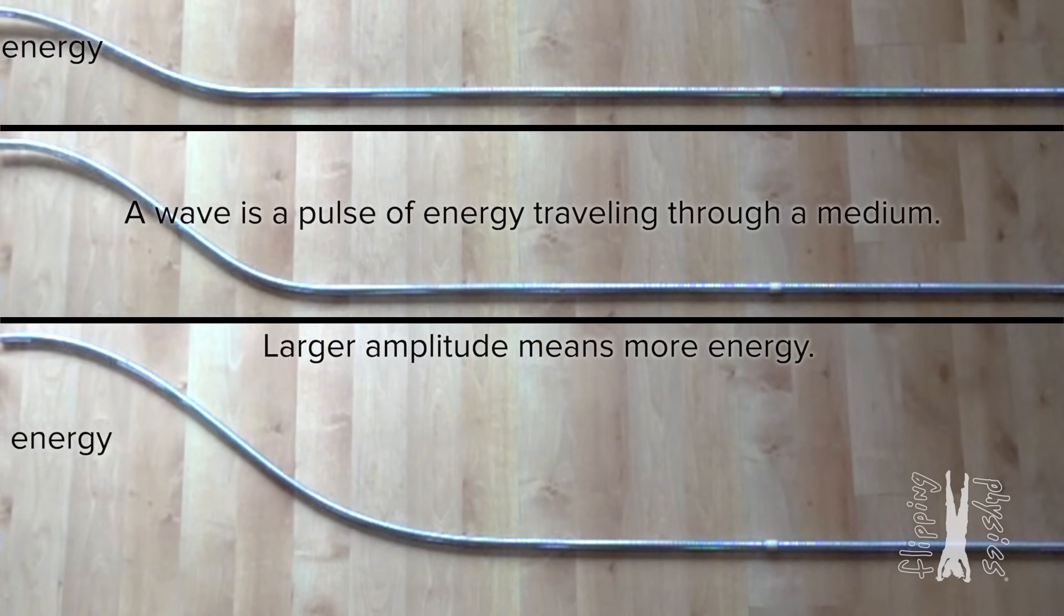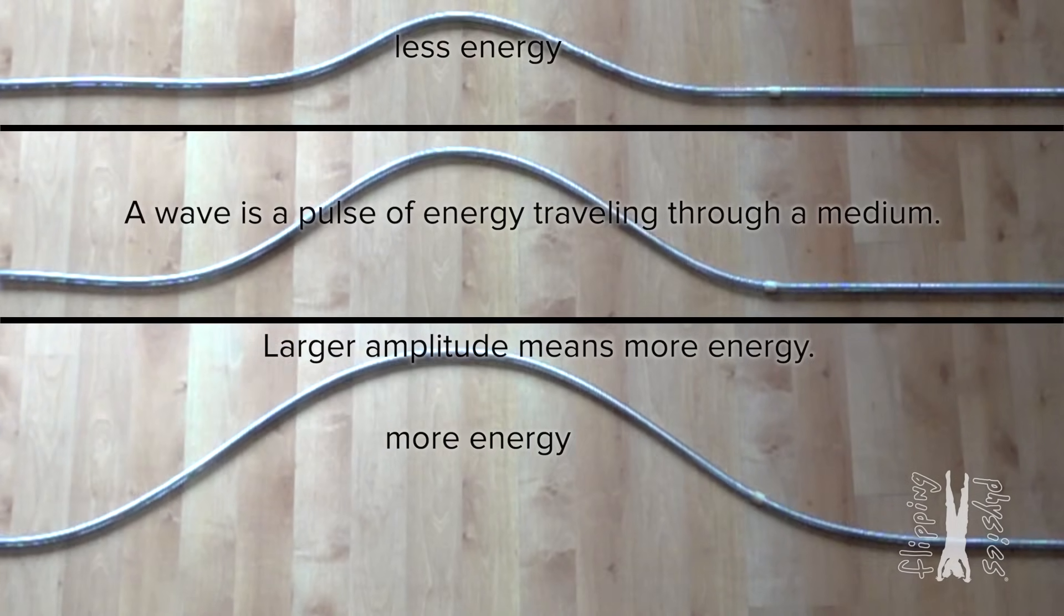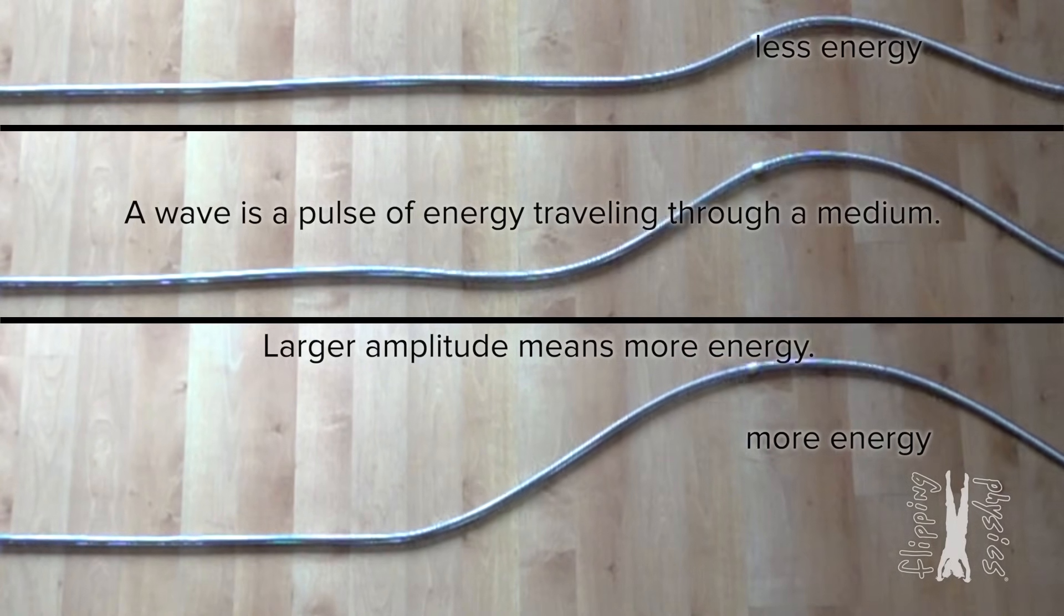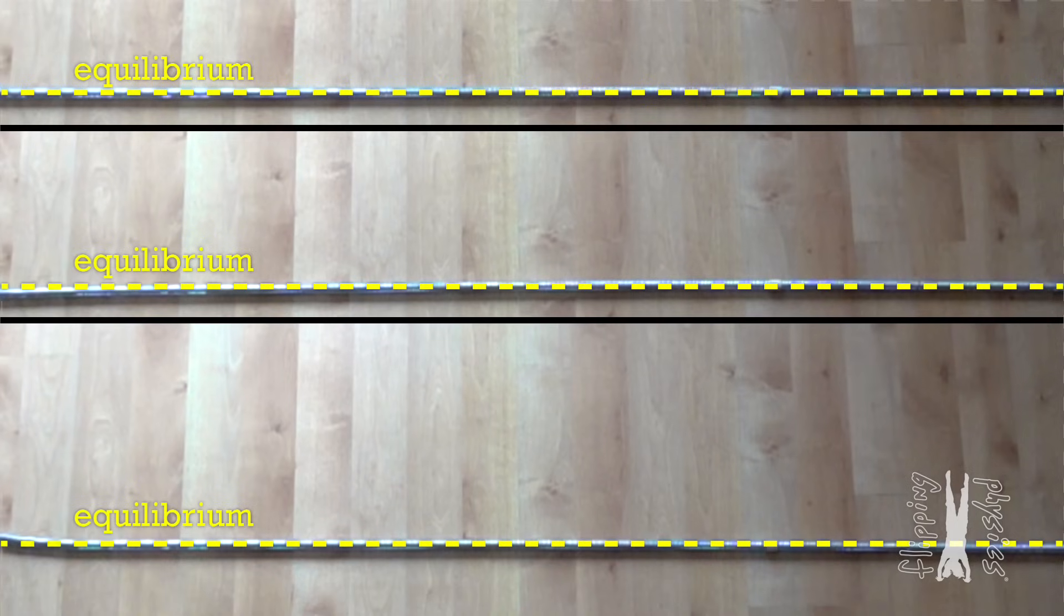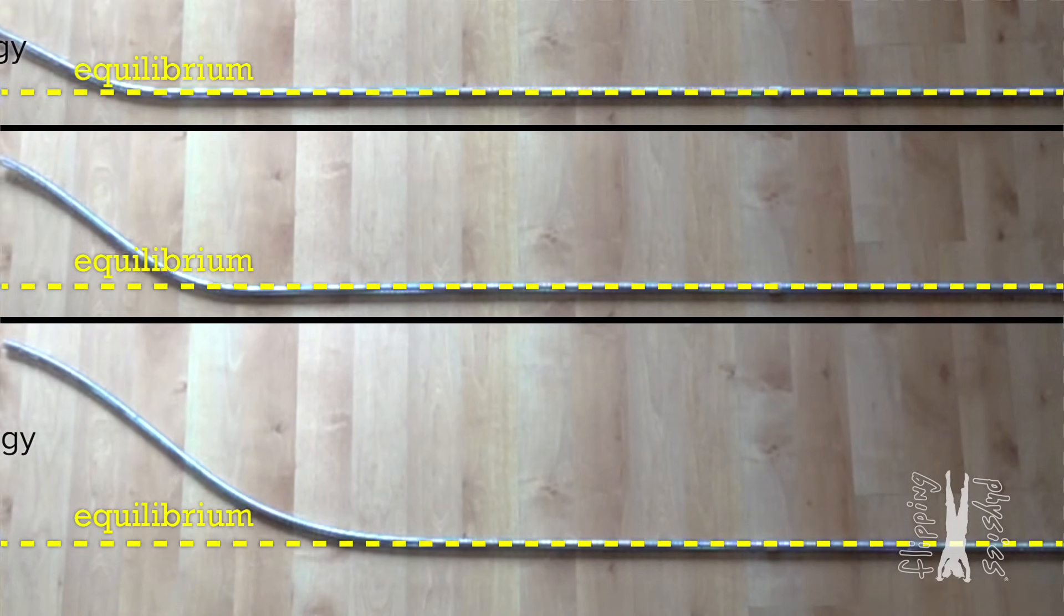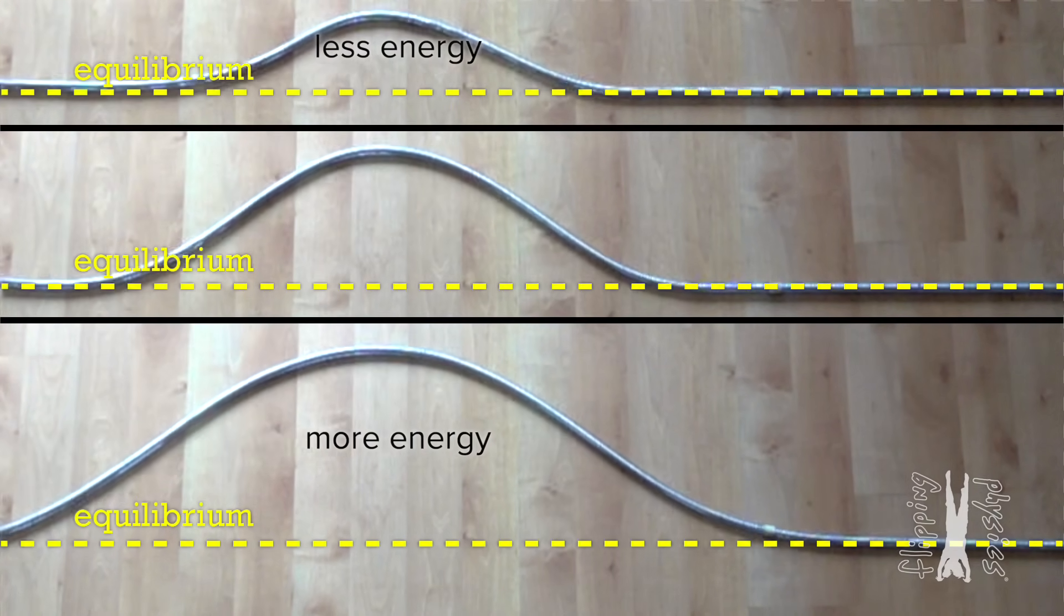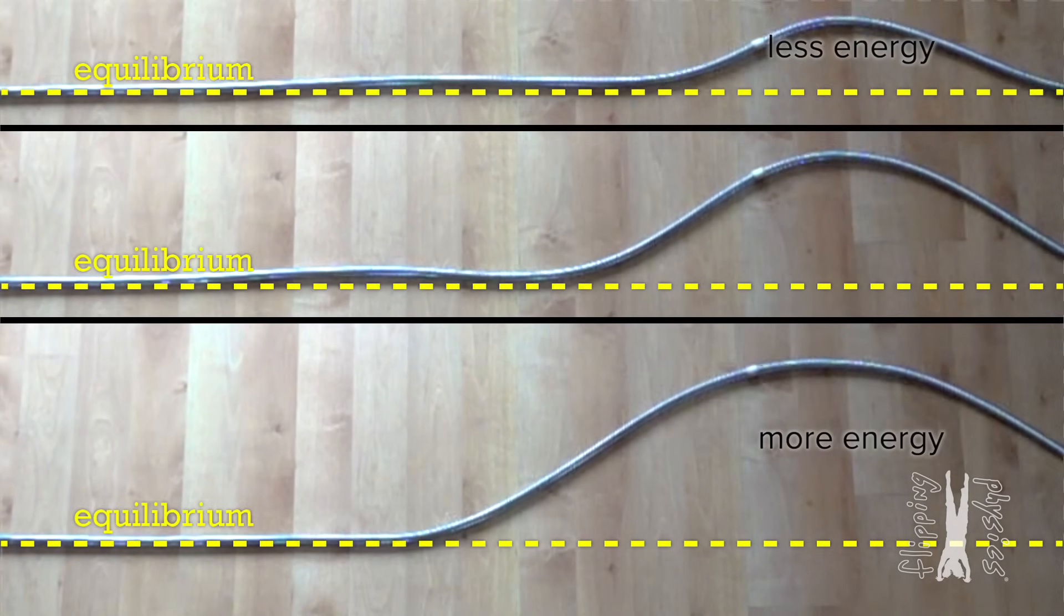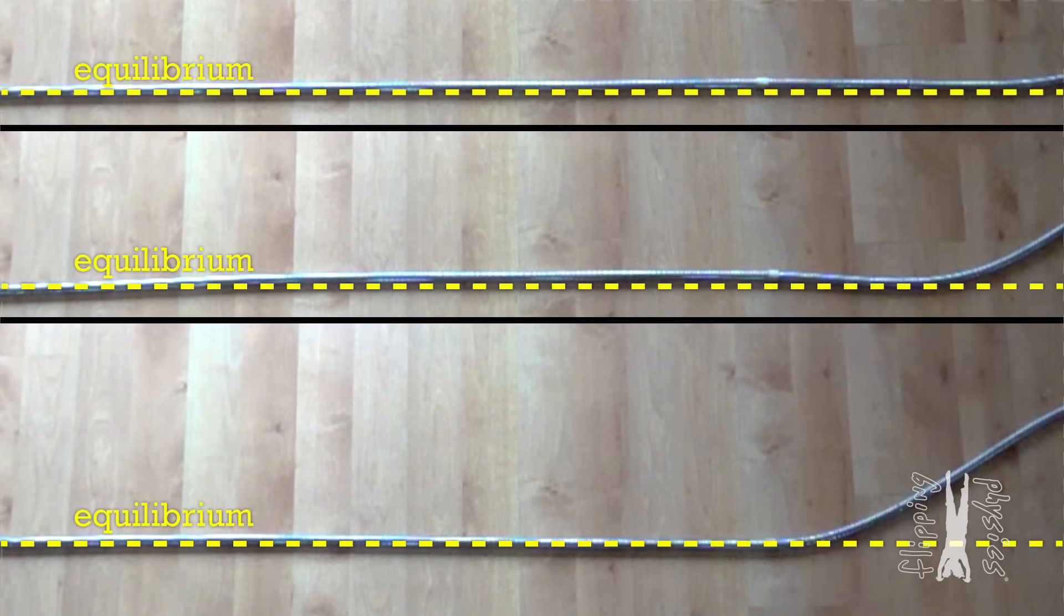We know amplitude is the maximum displacement of the wave from equilibrium position. Does that mean we can treat the equilibrium position as the position of the medium before and after the wave passes by a point? Or where the spring is before and after the wave is there? Y'all are correct. A larger amplitude means more energy and where the spring starts and ends is the equilibrium position. And I bet a larger amplitude wave has more energy because your hand has to do more work to give it that amplitude, right? Yes, very nice Bobby.